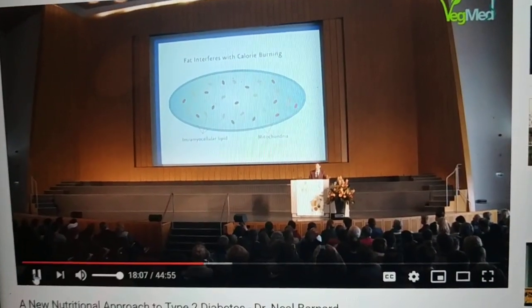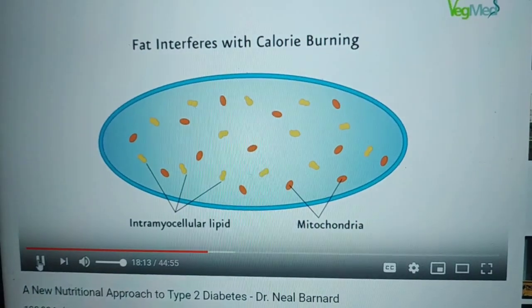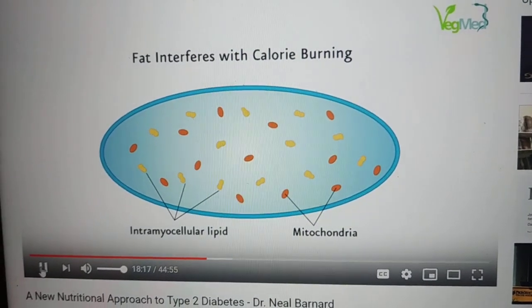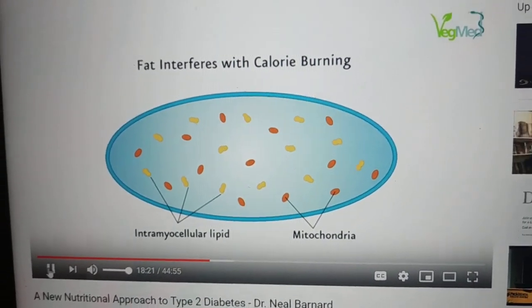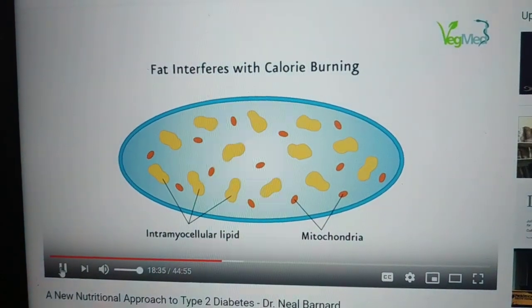Now, scientists don't like a word like fat — it's only got three letters. So we call it intramyocellular lipid, but it's fat inside the cell is what it is. And if I'm eating chicken fat, or beef fat, or fryer grease, or olive oil, or any kind of fat, here's what happens: it comes into my cells. And it comes into your cells. Let's get into the cells.